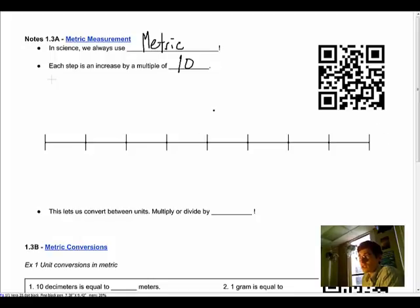We've got this number line here we're gonna fill in. Right here in the middle we're gonna call this the base, so this is going to be quantity number one, and it would be something like grams, meters, or liters with no prefix attached to these.